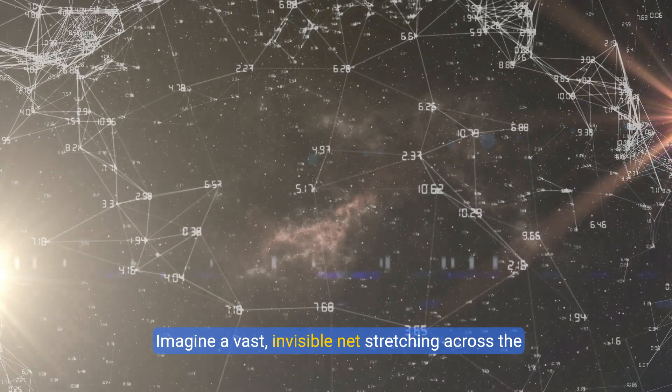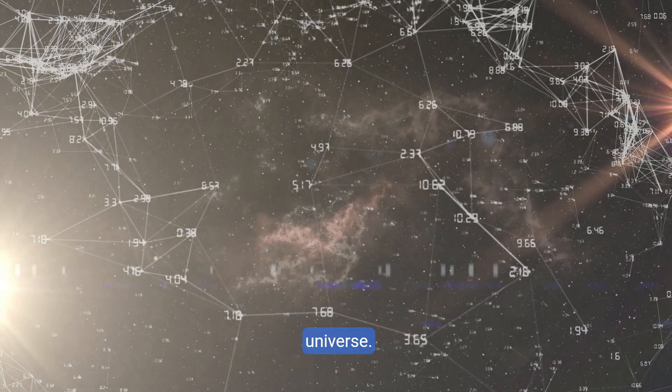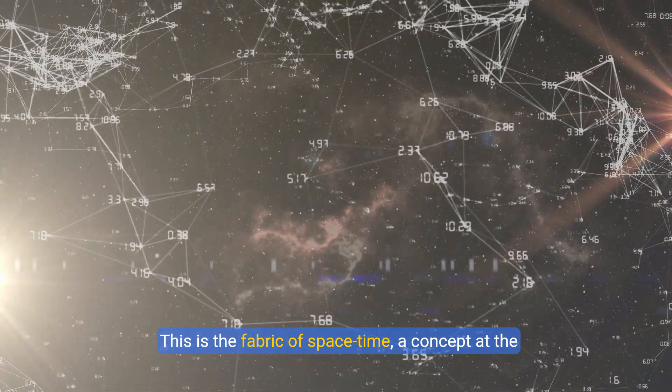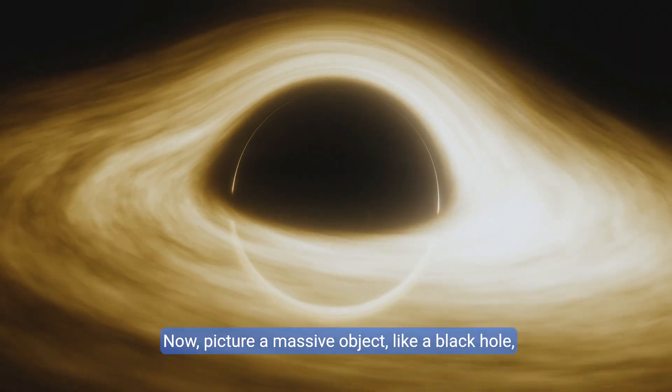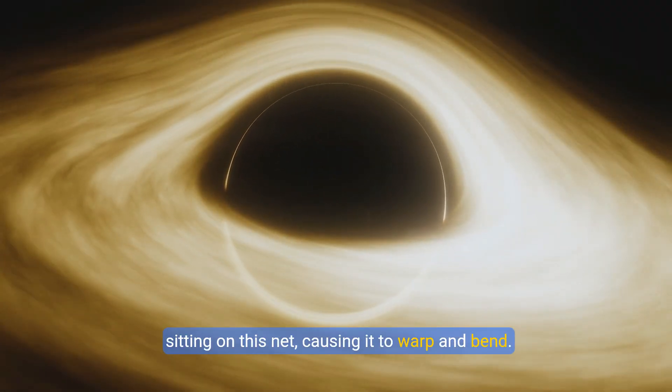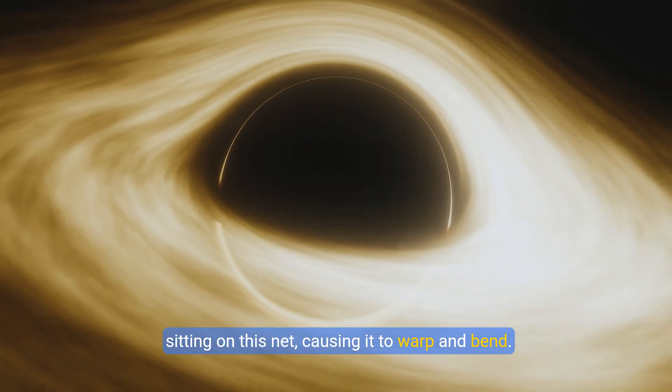Imagine a vast, invisible net stretching across the universe. This is the fabric of space-time, a concept at the heart of modern physics. Now picture a massive object, like a black hole, sitting on this net, causing it to warp and bend.